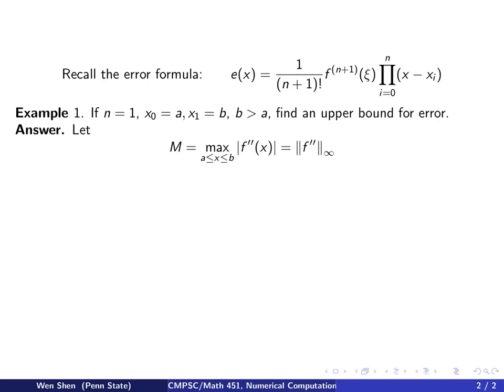So if n equals 1, we see from the error formula that the derivative here will be the second derivative. So this motivates a notation. Let's call the maximum value of the second derivative for x on the interval between a and b, in absolute value, let's call this number M.